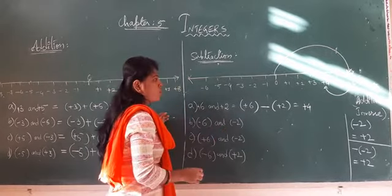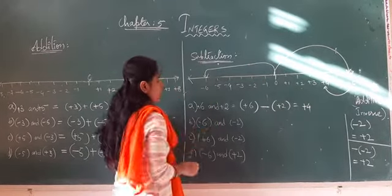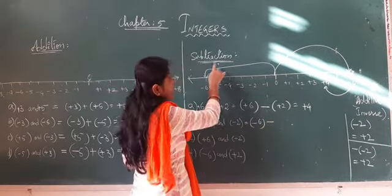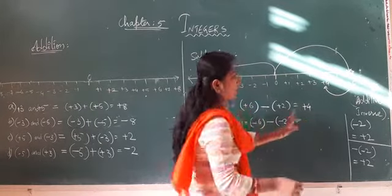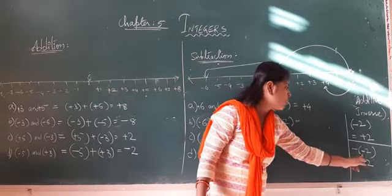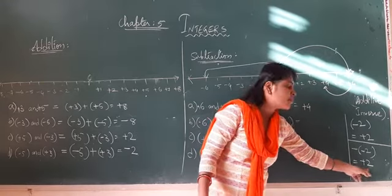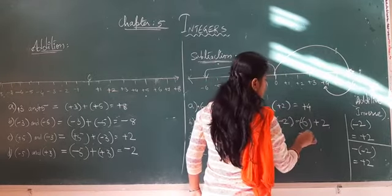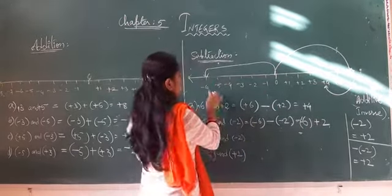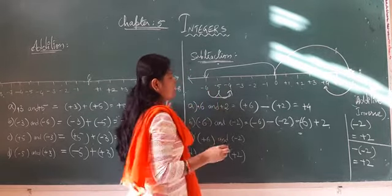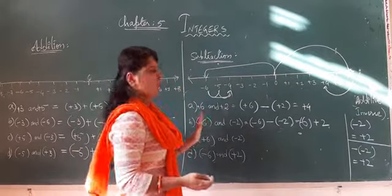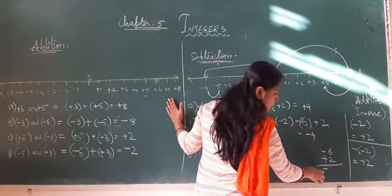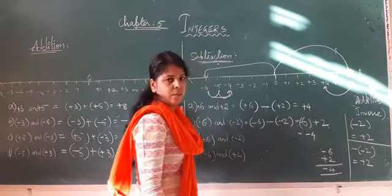Coming to the next subtraction: minus 6 and minus 2. From 0 we go to minus 6. We are doing subtraction of minus 2, and as I said using additive inverse, minus of minus 2 becomes plus 2. So we have minus 6 plus 2. The greater symbol is minus. From 6 subtract 2 gives 4, so the answer is minus 4. You can verify this with direct calculation as well.